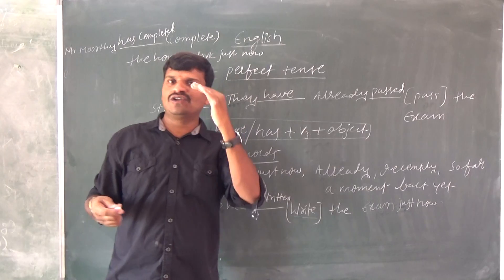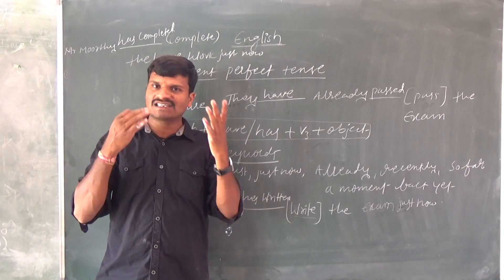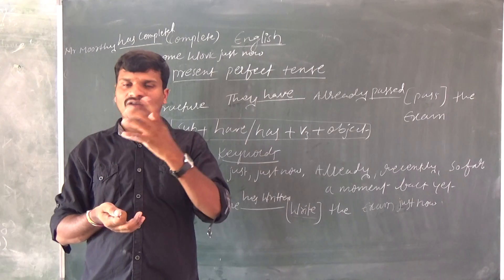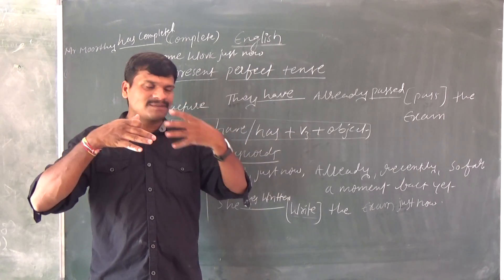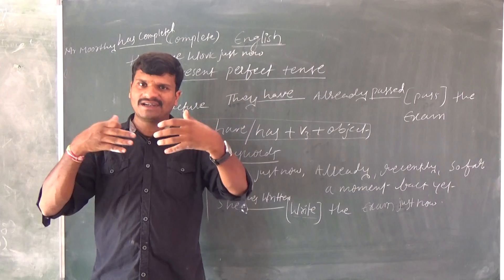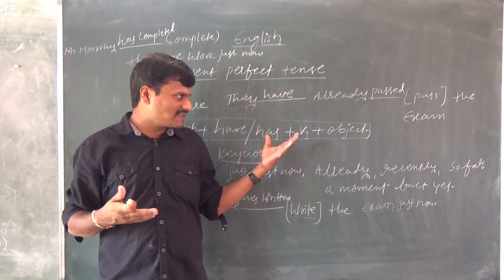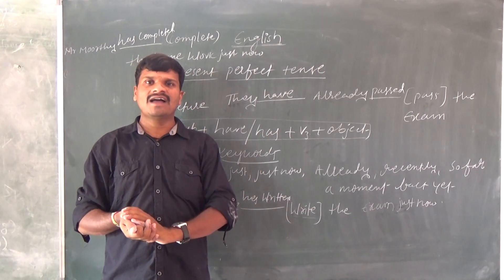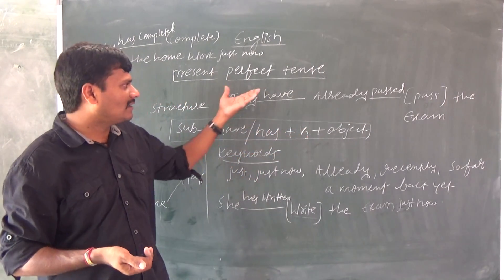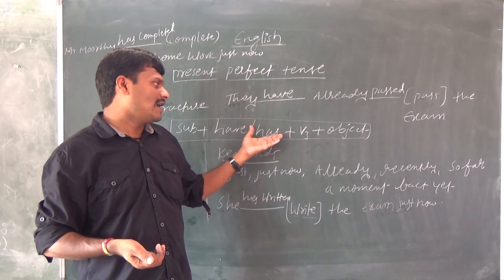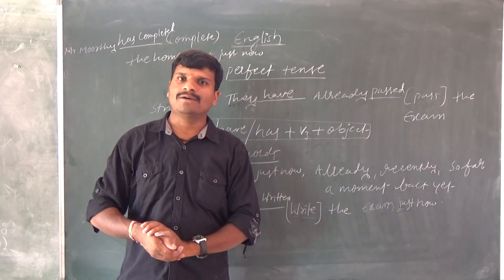So the structure is: Subject + have/has + V3 + Object. Before going to learn any tense, every student should learn the verb forms — what is V1, V2, V3, V4. Then the tense becomes very easy. If you know the tenses, automatically you can speak and write exams very well. English depends on tenses, so everybody has to learn verb forms also.